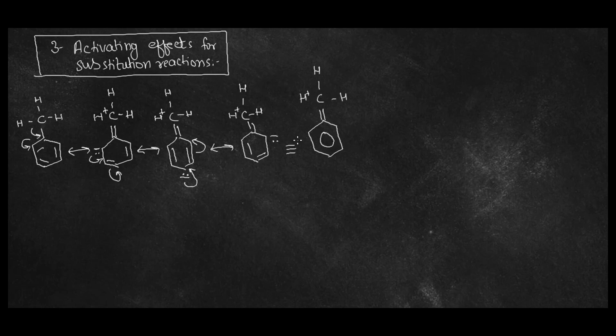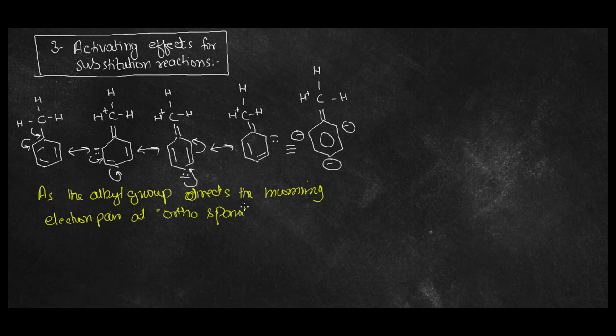benzene ring, and ultimately it gives negative charge over certain positions. So as alkyl group, there is an incoming electron pair at ortho and para positions, that is shown, that is clearly shown by the effect of hyperconjugation.